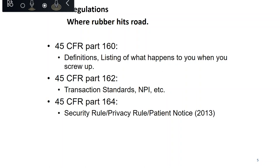The regulations are in three areas of the Code of Federal Regulations. 45 CFR Part 160 includes definitions and administrative issues such as addressing fines and seeking judicial relief. 45 CFR Part 162 covers transaction standards and the National Provider Identifier — whenever a provider submits a claim, they must include their NPI number. Part 164 is where you find the security, privacy, and other obligations such as patient notice, which came about in 2013.